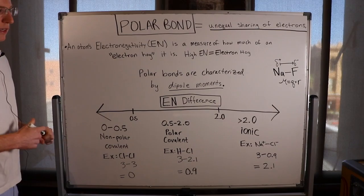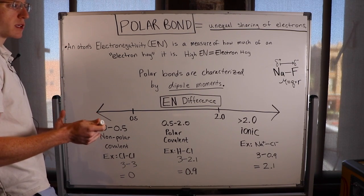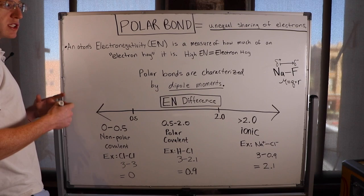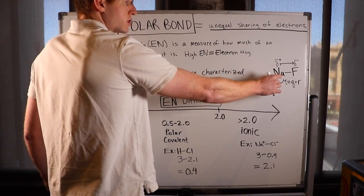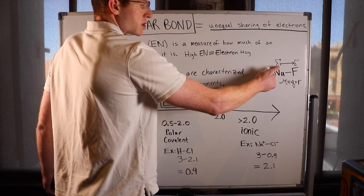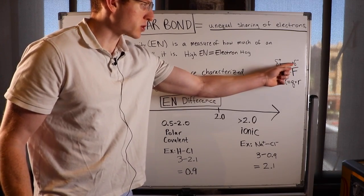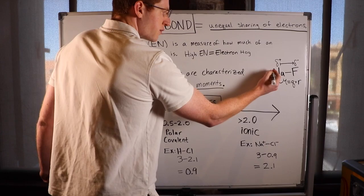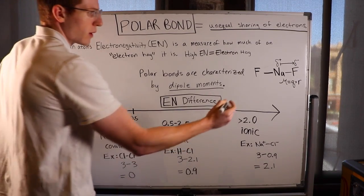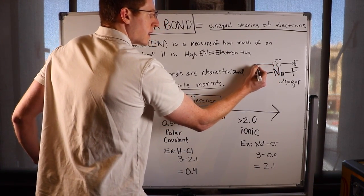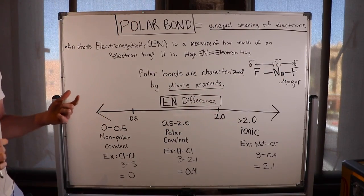We can have polar bonds within a molecule but still have an overall nonpolar molecule, when the dipole moments cancel each other out. For example, sodium fluoride has a dipole moment from sodium toward fluorine. But if there were another fluorine on the directly opposite side, we'd have another dipole moment in exactly the opposite direction, and they would cancel each other out — like a tug of war where both people are equally strong.